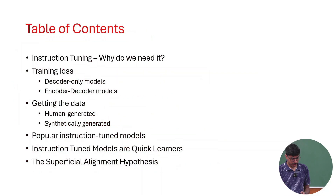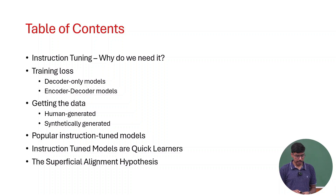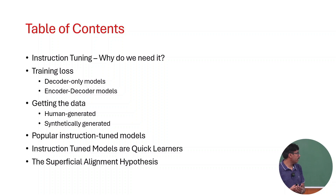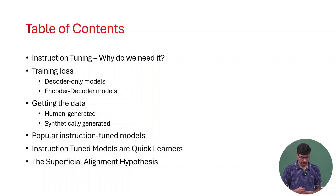This is what we covered in the last class, and this is approximately what we will cover today: why we need instruction tuning, what is the loss function that we use for instruction tuning which is very standard, and most importantly, how do we get the data required to do instruction tuning — that is the interesting part. Then we look at some instruction-tuned models and some of their properties.